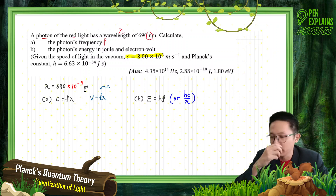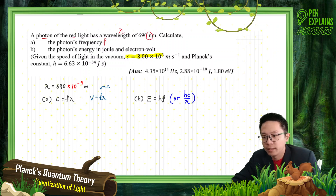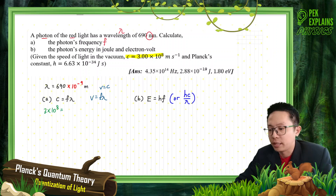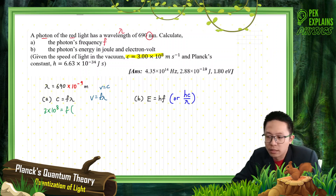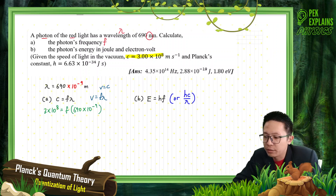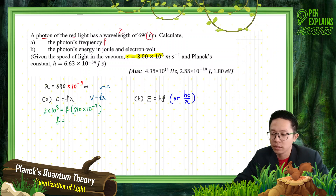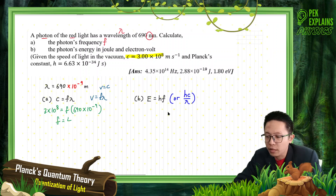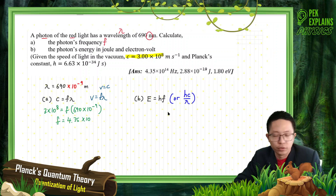So now we want to find the frequency. We can find frequency from this formula — just substitute all the values. C is 3 times 10 to the 8, and the frequency times the wavelength, 690 nanometers, changed to meters, negative 9, already in SI units. So finally, the frequency — we get the answer 4.34 times 10 to the 14 hertz. That's the answer.